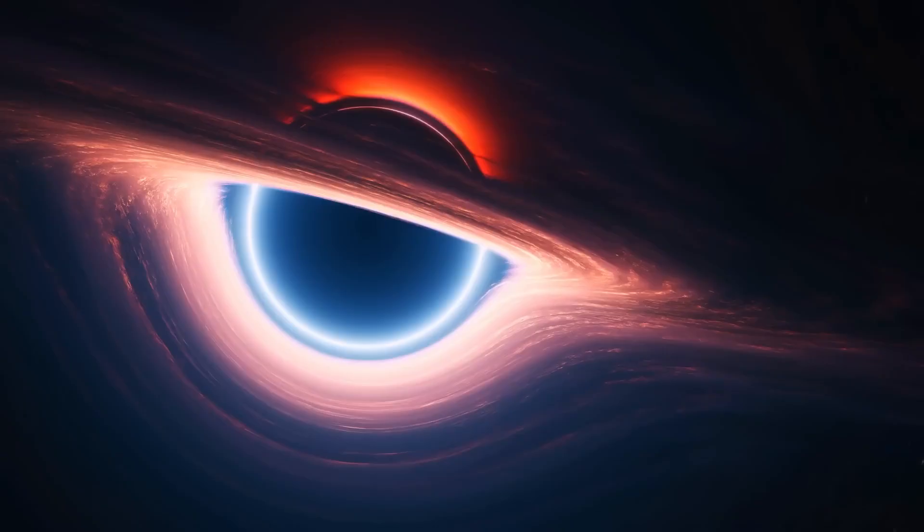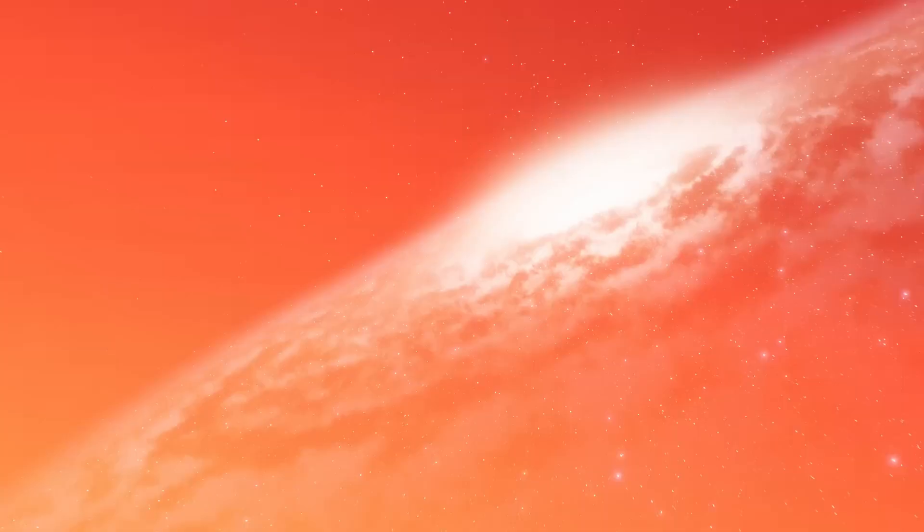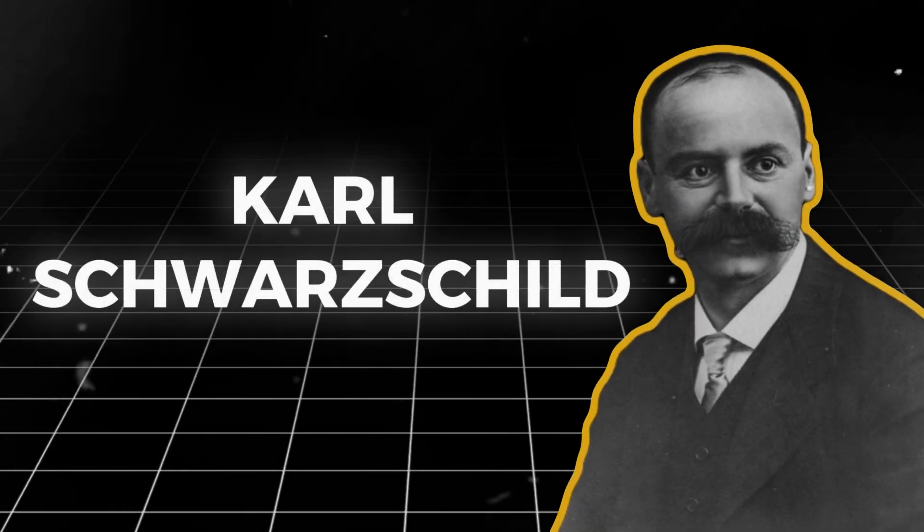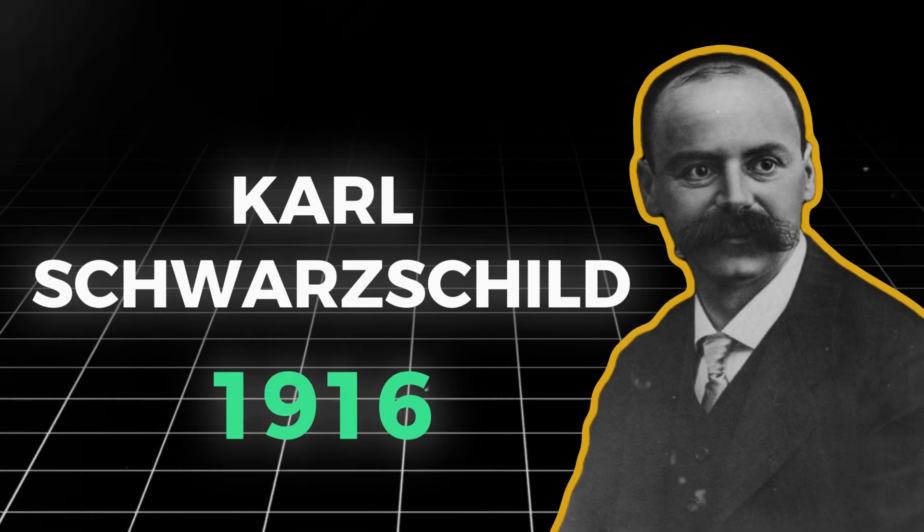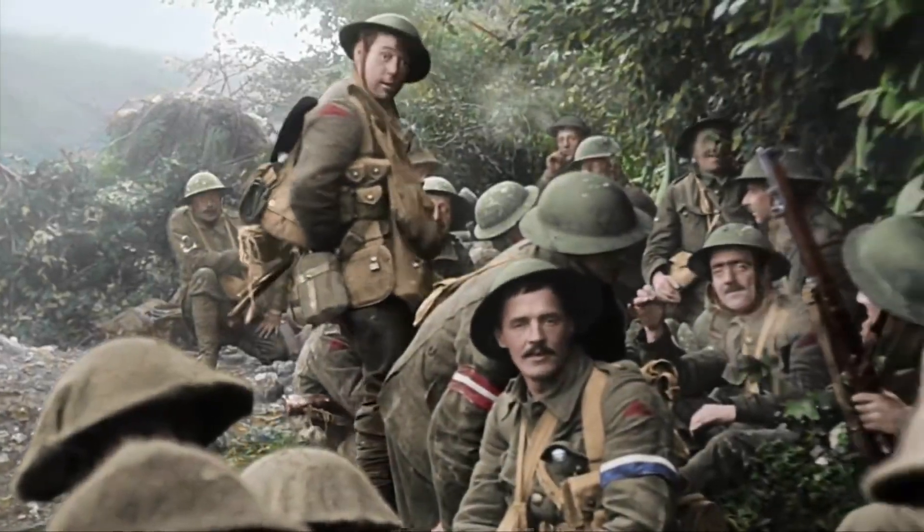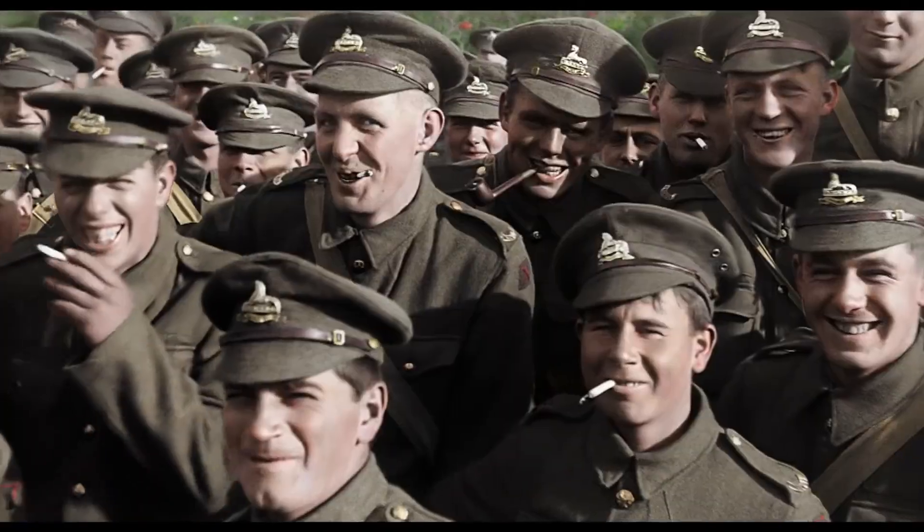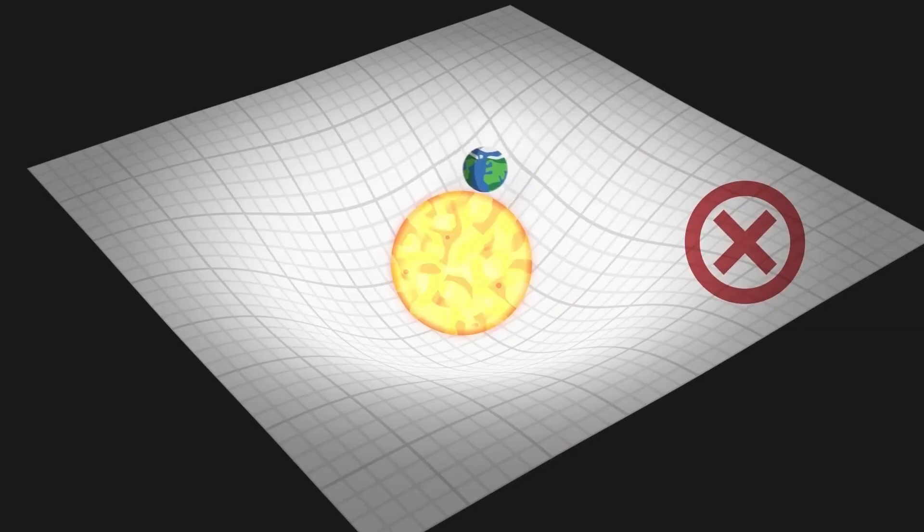One of the earliest pioneers in the study of black holes was the brilliant physicist Karl Schwarzschild. In 1916, while serving as a soldier on the Eastern Front during World War I, Schwarzschild found himself with plenty of time to contemplate Einstein's newly formulated general theory of relativity.